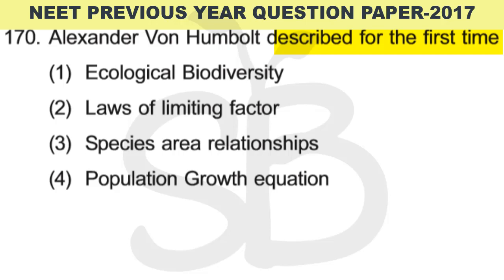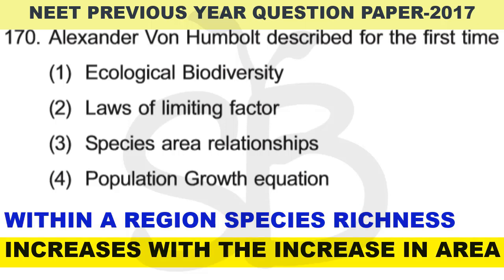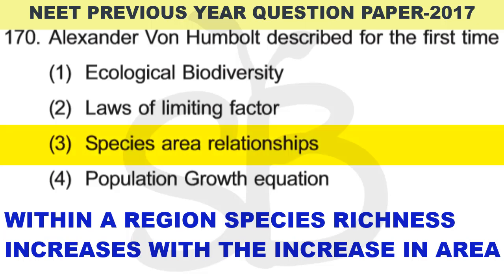Question number 170: Alexander von Humboldt described for the first time which of the following? His contribution relates to the theory that within a region, species richness increases with the increase in area. As area increases in a particular region, species count also increases. The correct answer is option 3: species-area relationship.